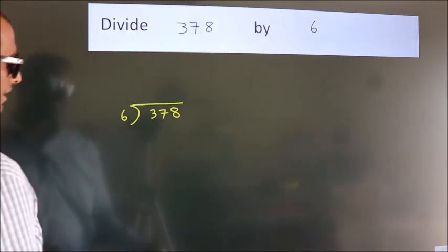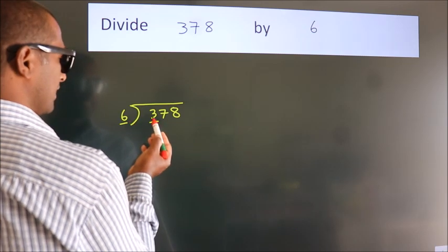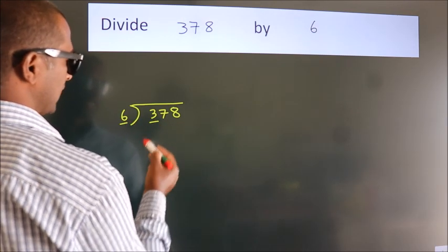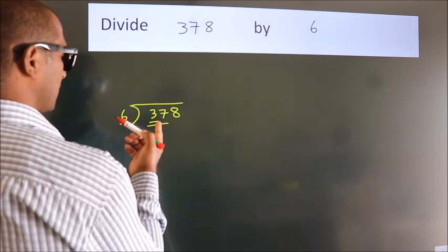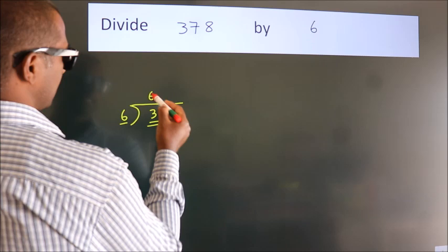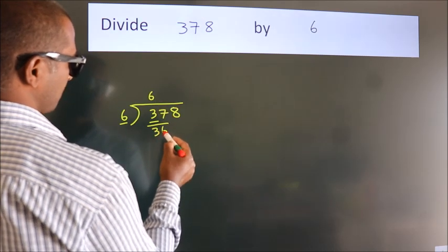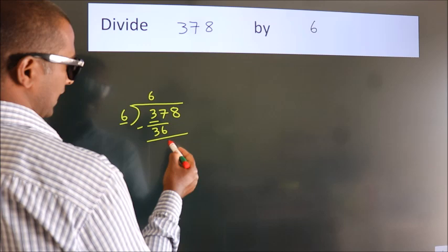Next, here we have 3, here 6. 3 smaller than 6, so we should take 2 numbers, 37. A number close to 37 in 6 table is 6×6=36. Now we should subtract. We get 1.